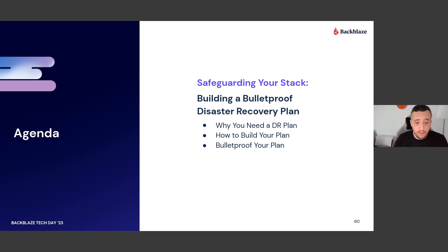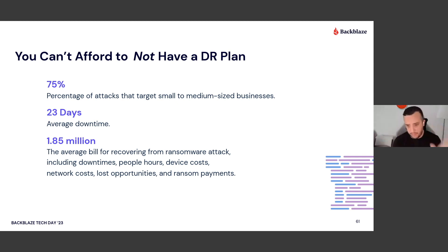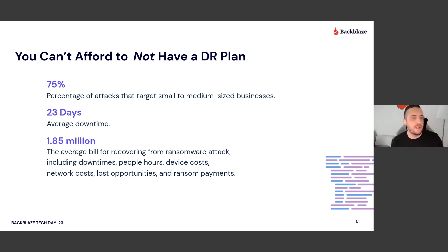I've talked to a lot of folks who have unfortunately been affected by ransomware. It's not just the big ones you hear about in the news like MGM — it's small to medium-sized businesses that are getting targeted as well. It's becoming a matter of not if, but when. It's really important, no matter what size of business you are, to have a disaster recovery plan. The average downtime we saw last year for folks hit by ransomware was 23 days.